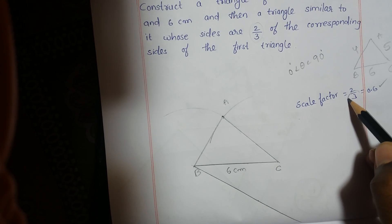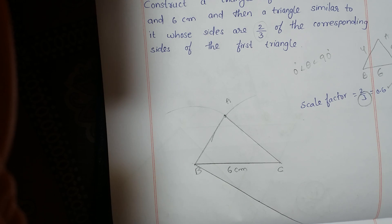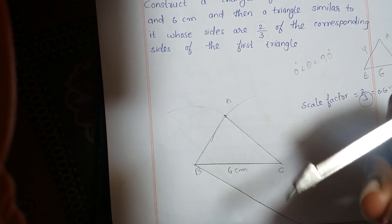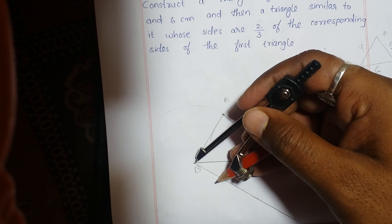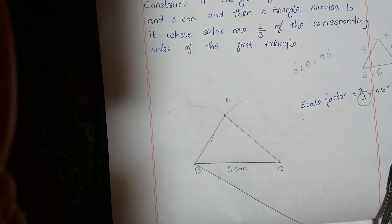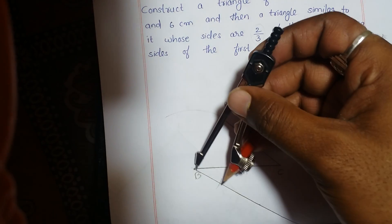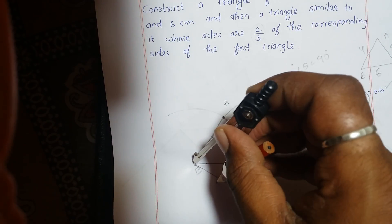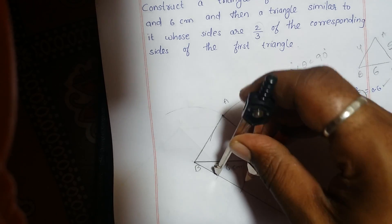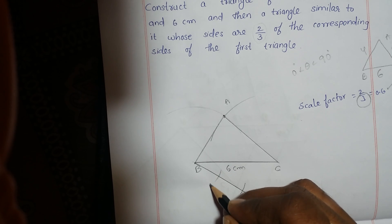The denominator contains 3 parts, so with the help of a compass take some radius and cut the Bx line segment into 3 parts. With the same radius, cut 2 more arcs to divide Bx into 3 parts, labeling them B1, B2, B3.